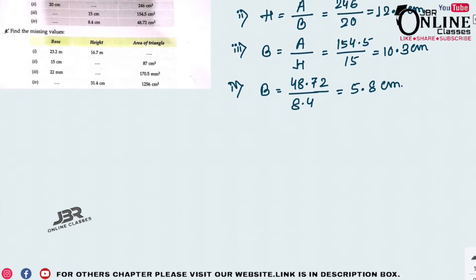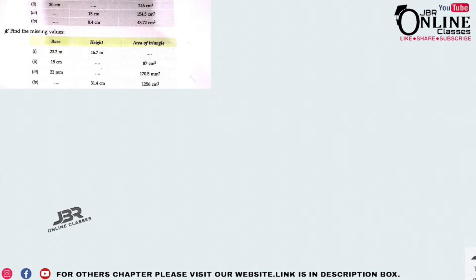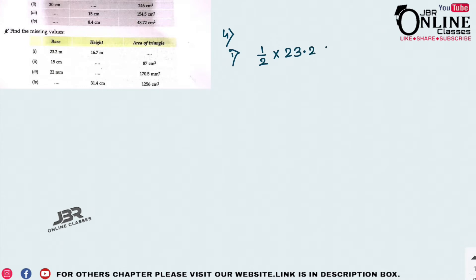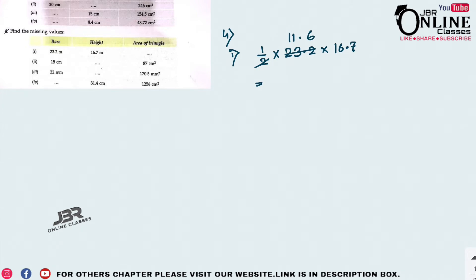Sum number 4: base and height are given, find the area of the triangle. Area = ½ × base × height = ½ × 23.2 × 16.7. 23.2 ÷ 2 = 11.6, then 11.6 × 16.7 = 193.72 cm².